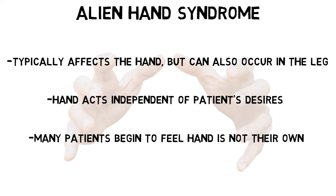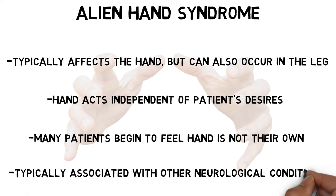Alien hand syndrome most commonly occurs as part of corticobasal syndrome, but there are many other causes as well, like stroke and Creutzfeldt-Jakob disease.